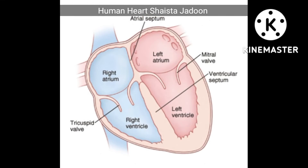There are four chambers in the heart: the right atrium, right ventricle, left atrium, and left ventricle. There are two valves in the heart: the tricuspid valve and the mitral valve, which is also known as the bicuspid valve.